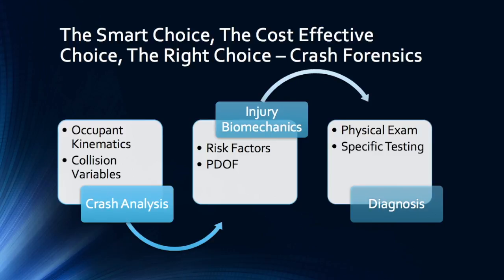The crash analysis determines how the occupant reacts in the car. The injury biomechanics analysis determines what soft tissue structures are most likely injured, and the physical examination evaluates these tissues to determine if the collision resulted in injuries, if any, and if injuries occurred, to what structures and to what extent.